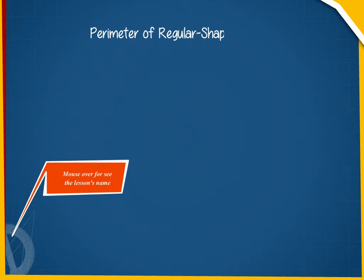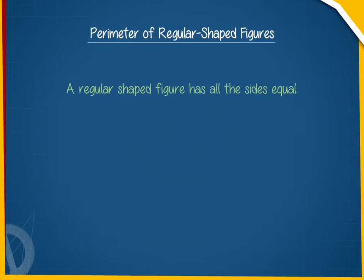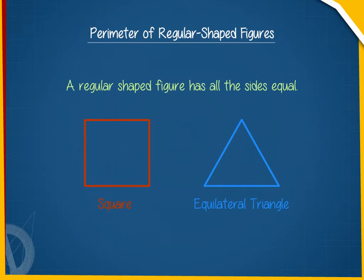Perimeter of Regular Shaped Figures. A regular shaped figure has all the sides equal, like square, equilateral triangles, etc.